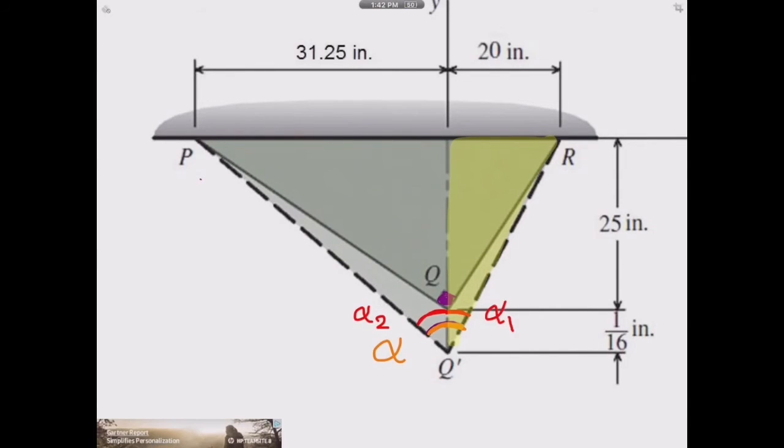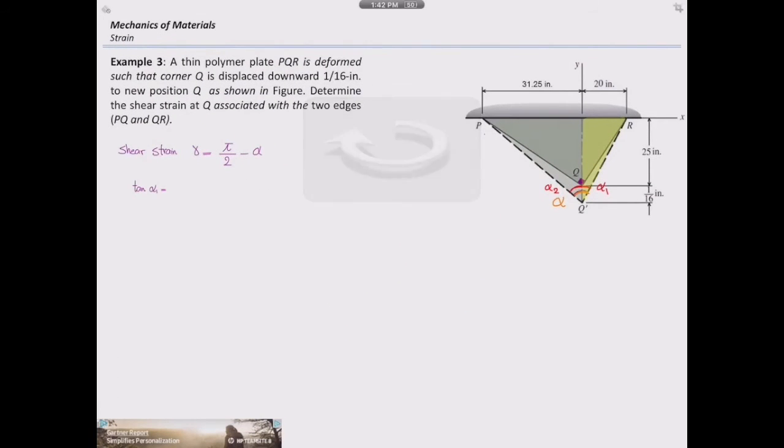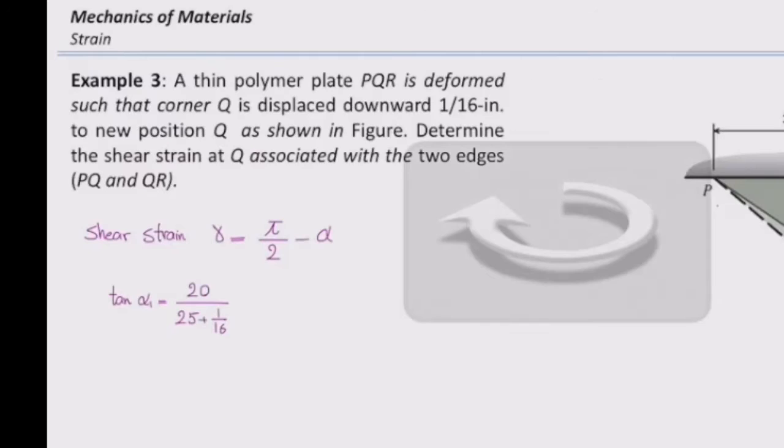How much would be the tangent of alpha 1 in this case? That would be 20 inch divided by 25 and 1/16 inch, correct. So now I can determine how much is the tangent of this case.